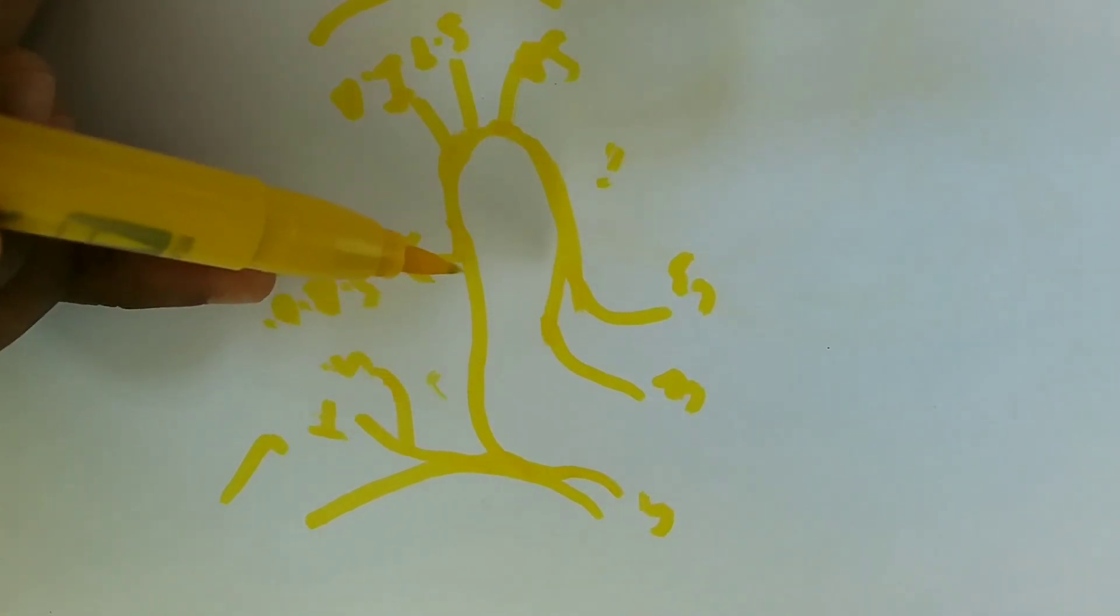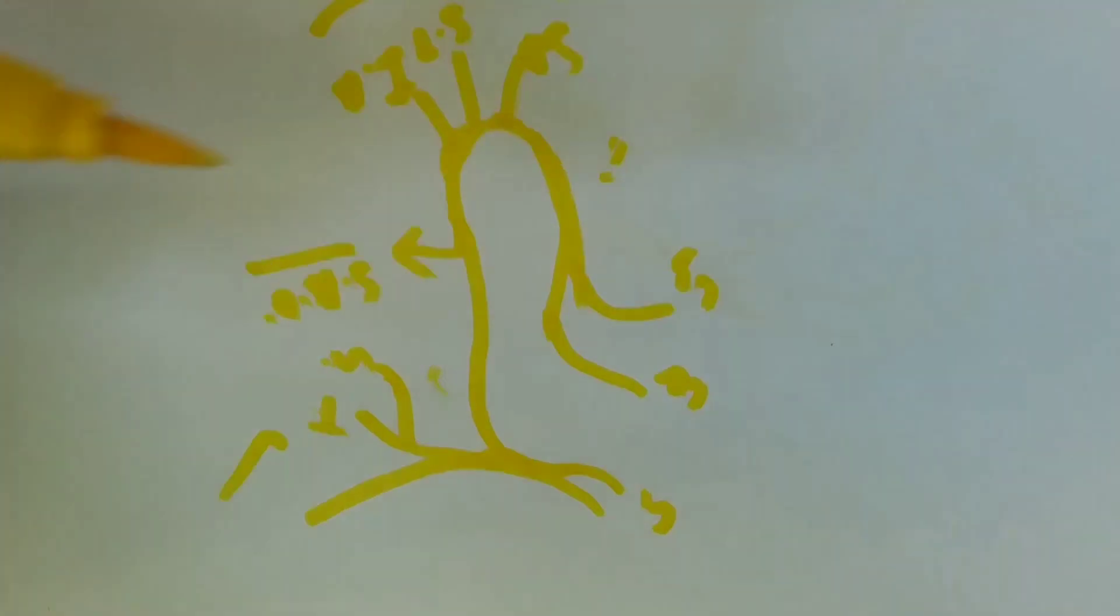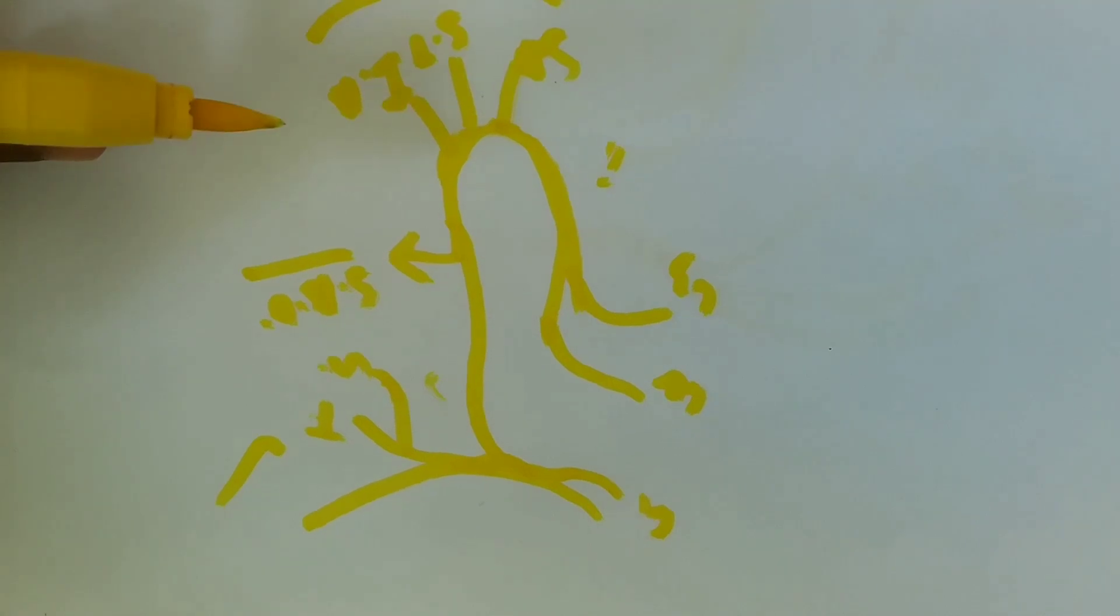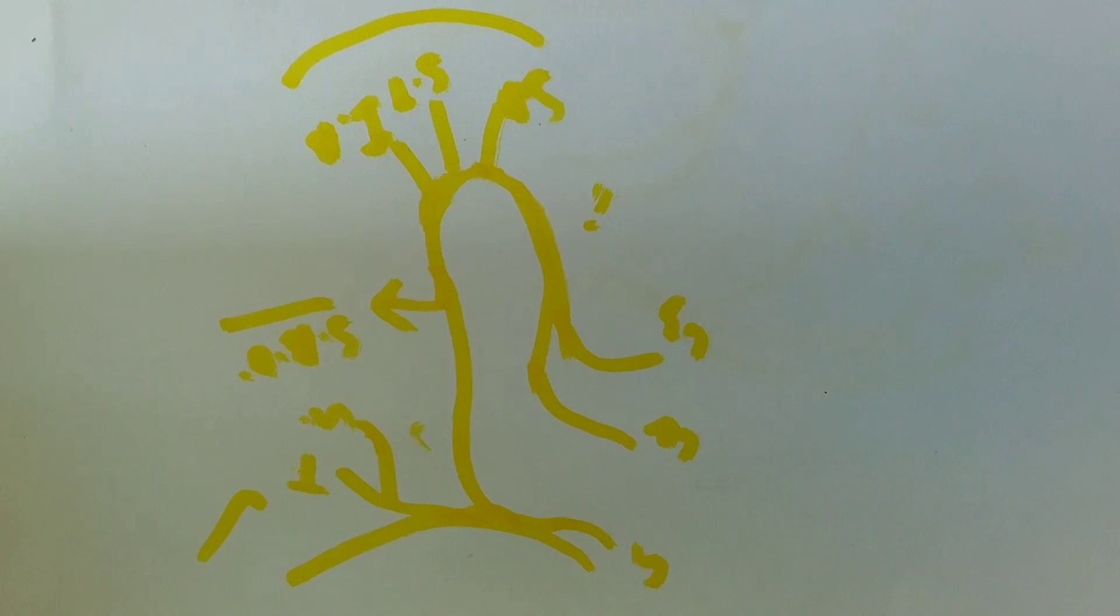The superior root lies on the common carotid artery. The inferior root lies lateral to the internal jugular vein and lies above the anterior surface of the carotid sheath. That's all about the ansa cervicalis.